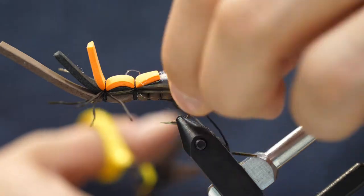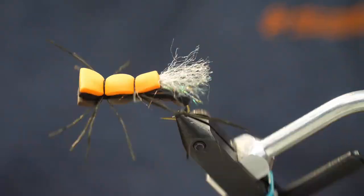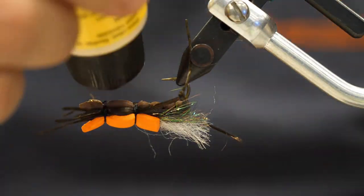Lots of movement. Our last step now is going to be to trim the head. I like to turn it on its side and just kind of round off to give it more of a natural shape. And there you have it. That's the Fat Albert. Put some sealant down, and it's ready to go.